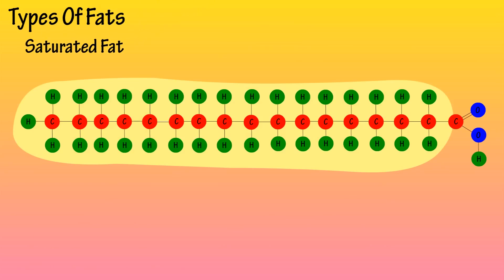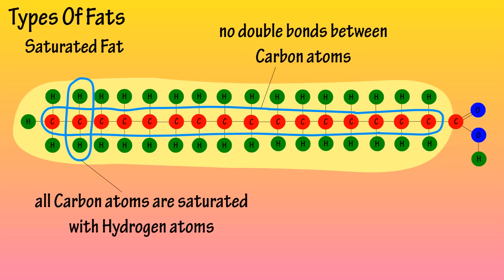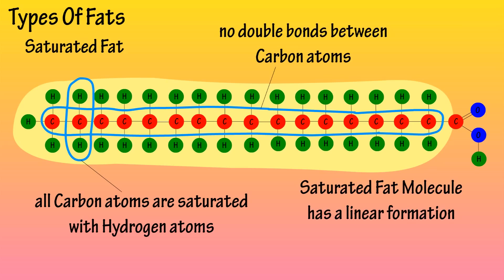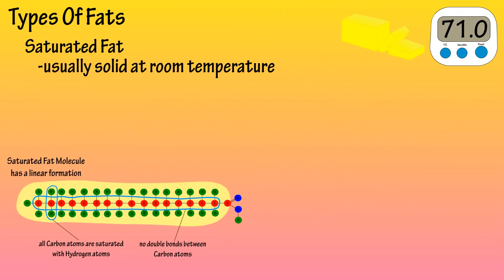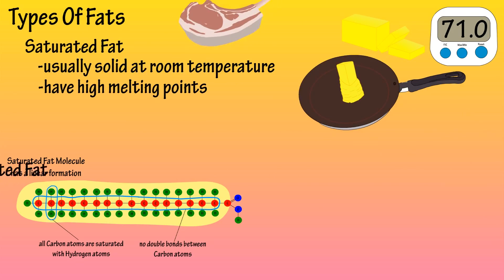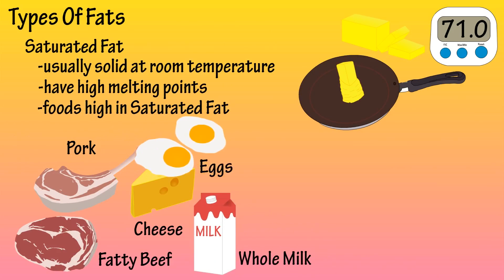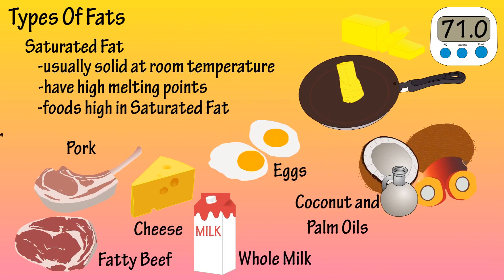The first type of fat we are going to look at is saturated fat. In saturated fat, all of the carbon atoms are saturated with hydrogen atoms and do not contain double bonds between the carbon atoms. This gives the molecule a linear formation. Saturated fats are usually solid at room temperature and have high melting points. Foods that are high in saturated fat include pork, fatty beef, cheese, whole milk, eggs, coconut and palm oils, and butter.